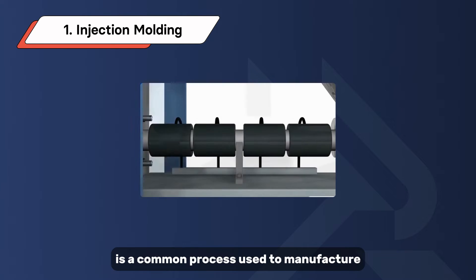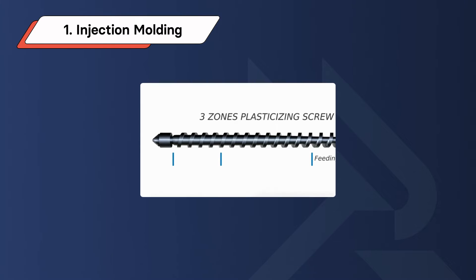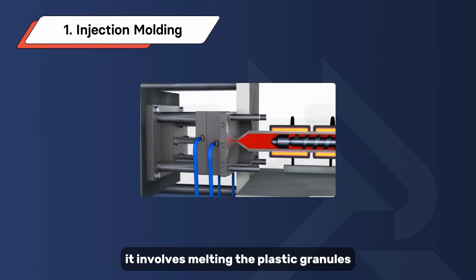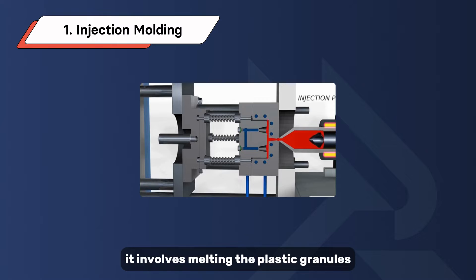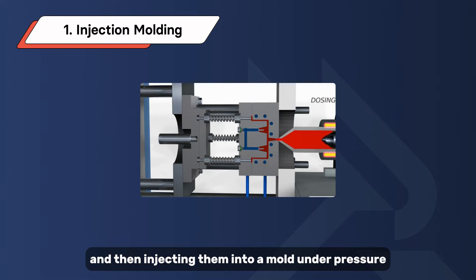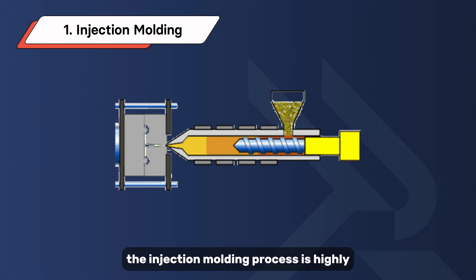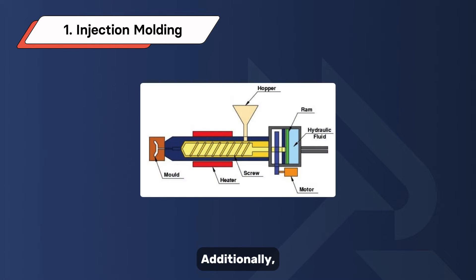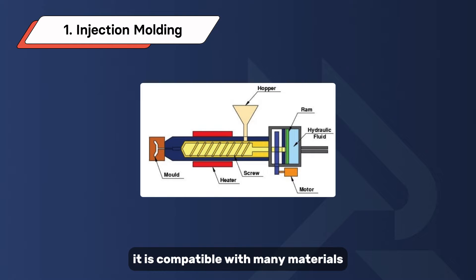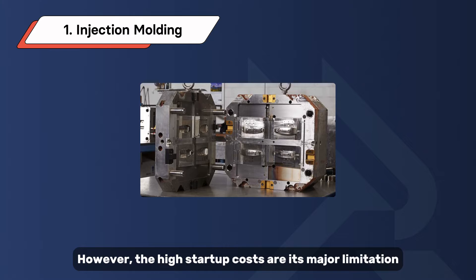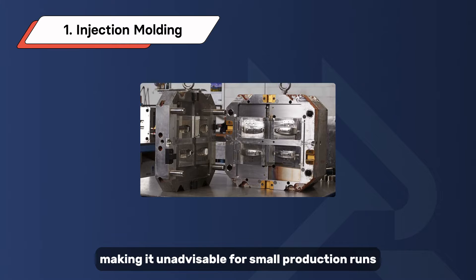Injection molding is a common process used to manufacture identical parts of varying sizes and shapes. It involves melting plastic granules and then injecting them into a mold under pressure. The process is highly repeatable and precise, compatible with many materials, and generates little waste. However, the high startup costs are its major limitation, making it unadvisable for small production runs.